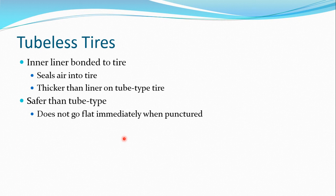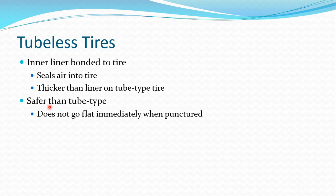The next topic is the tubeless tire, also known as an inner liner bonded type of tire. An inner liner is bonded to seal the air, creating a leak-proof connection between the rim and the tire — so no tube is used. This makes it thicker than a standard tubed tire. Safety-type tires can also be used as tubeless tires.